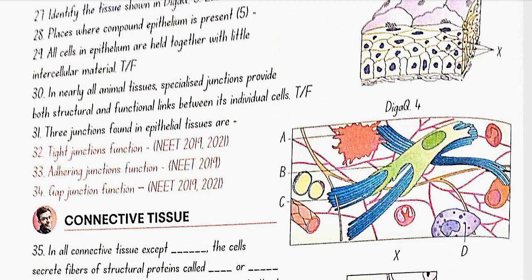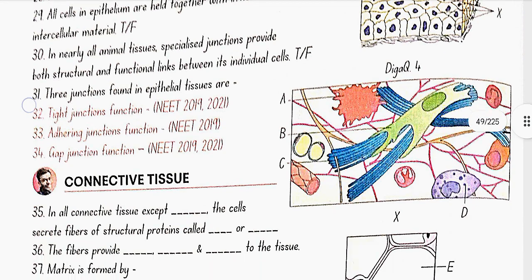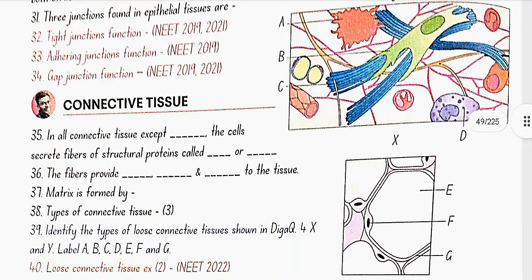Three junctions found in epithelial tissues are tight, adhering, and gap. Tight junctions help to stop substances from leaking across a tissue. Adhering junction performs cementing to keep the neighboring cells together. Gap junction facilitates the cell to communicate with each other by connecting the cytoplasm of adjoining cells for rapid transfer of ions, small molecules, and sometimes big molecules.